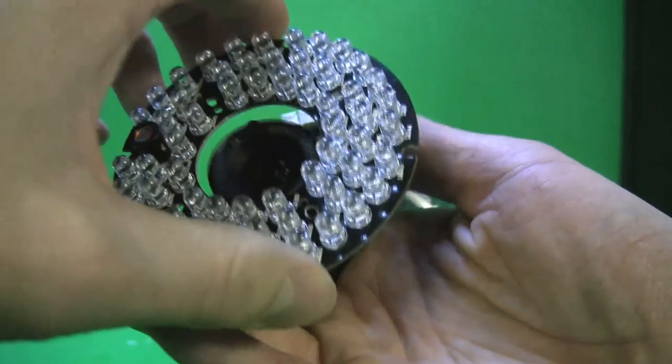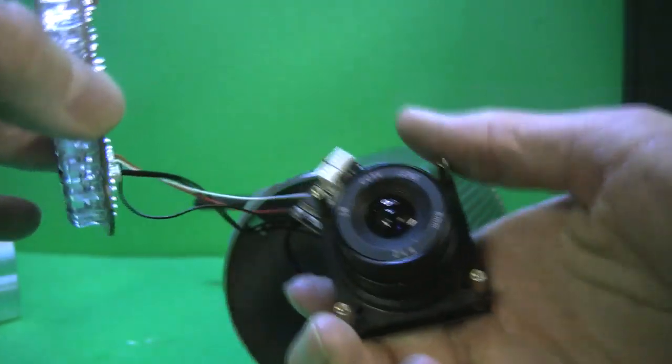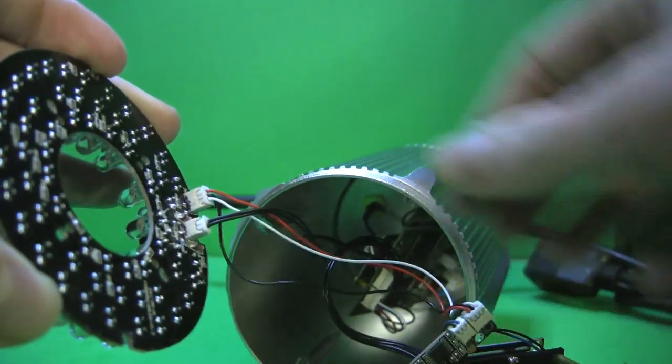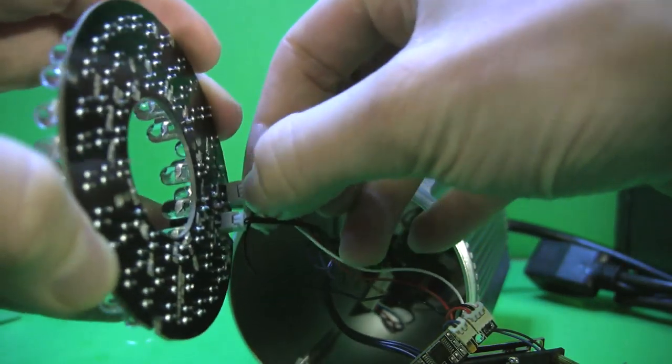Once you have those four screws removed, the IR board comes completely off the lens. Then you can undo the two connections that are right there so it's not in the way at all.